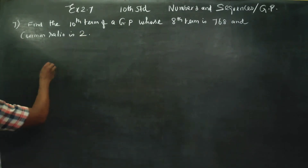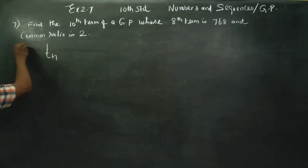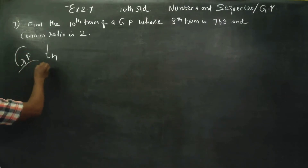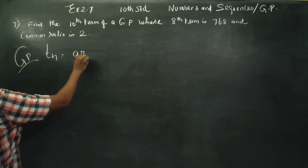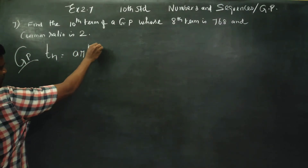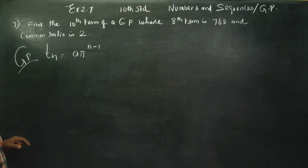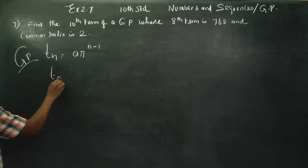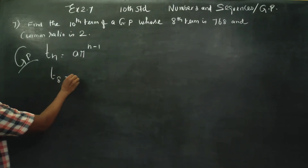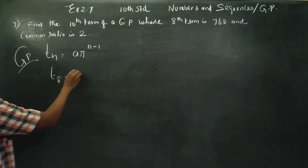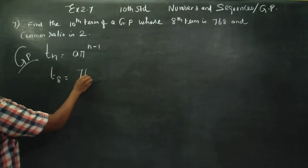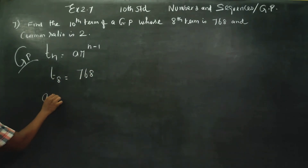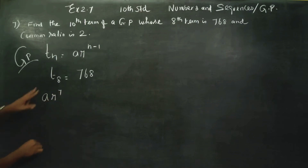To find the 8th term, we use the general term formula for a GP. The general term is Tn = Ar^(n-1). So the 8th term T8 = Ar^7, and T8 is equal to 768. Therefore, Ar^7 = 768.